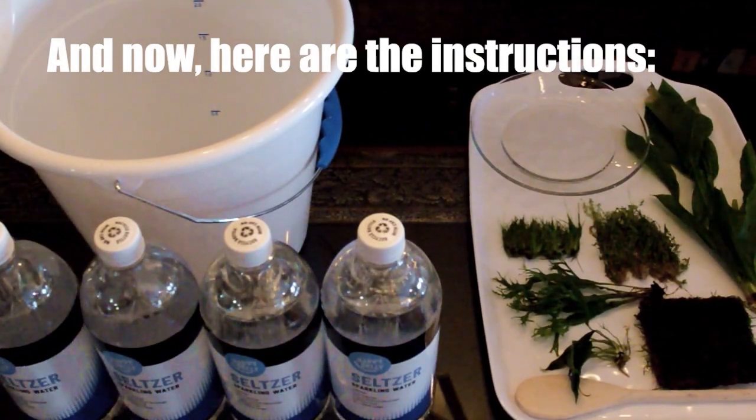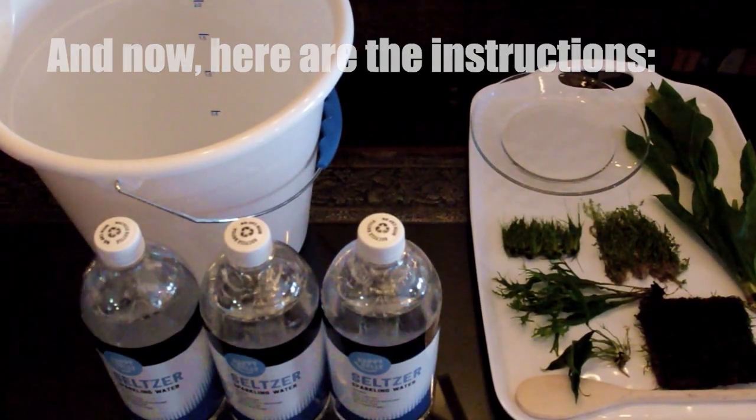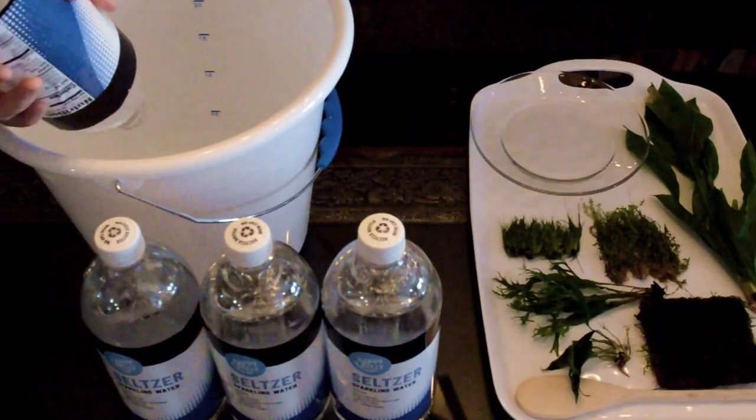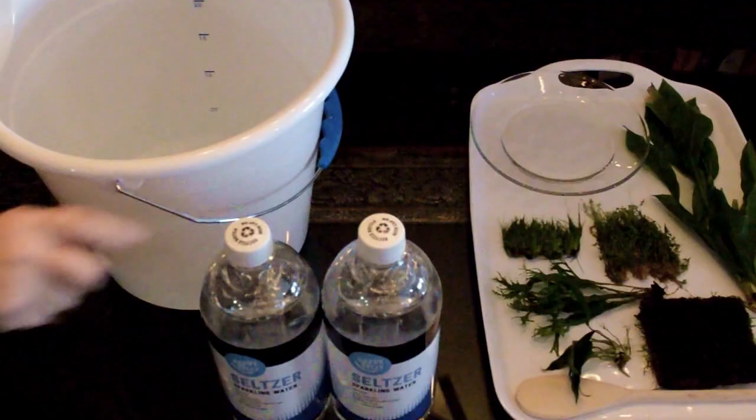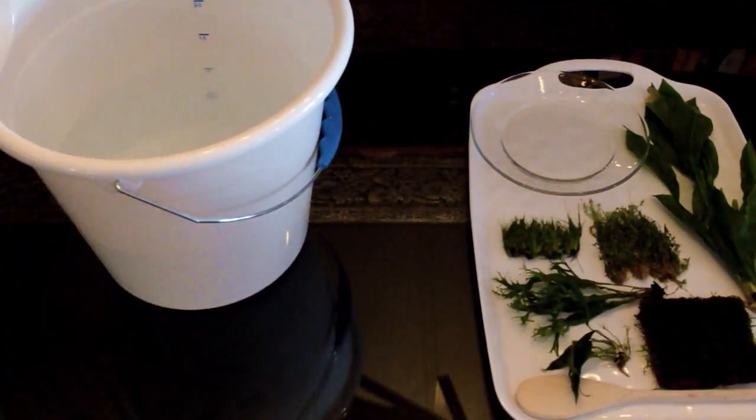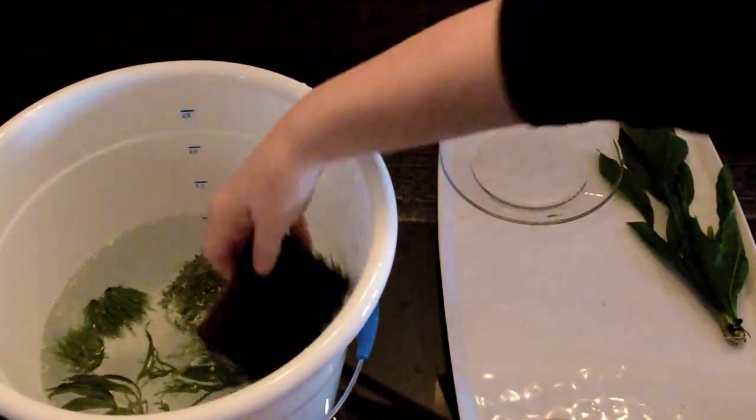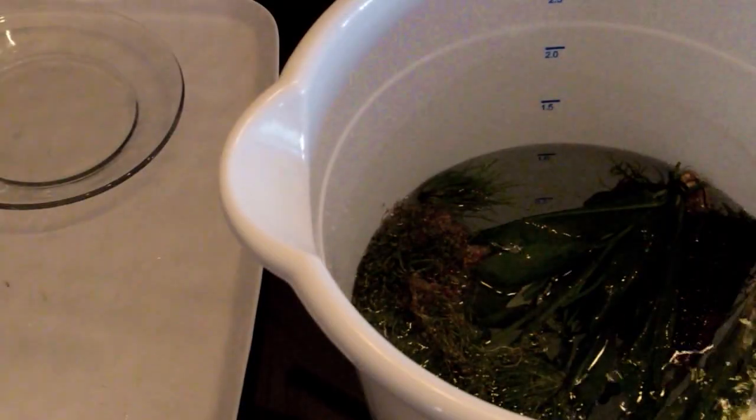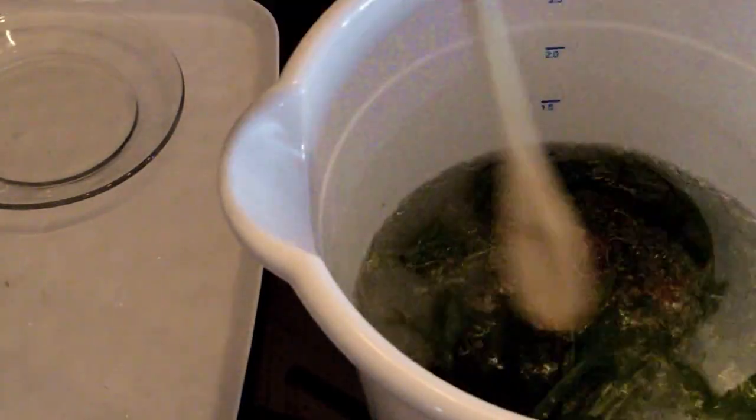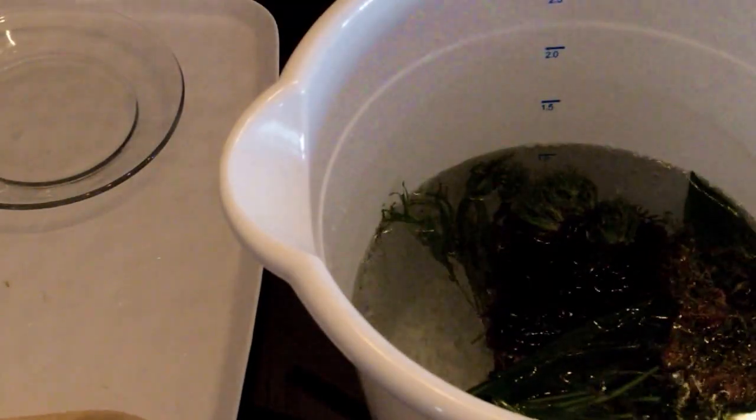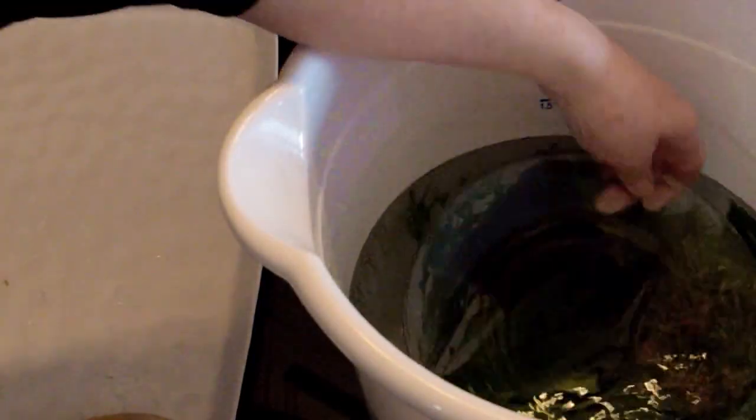Pour freshly opened seltzer into an open lid container. Place plants into seltzer. Stir gently to help it penetrate difficult areas. And add weight to keep them submerged.